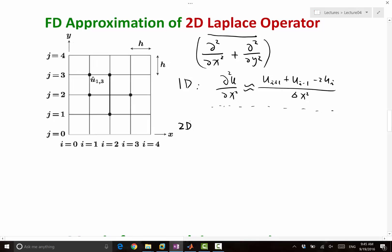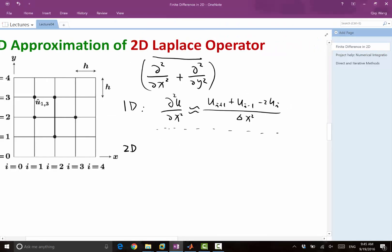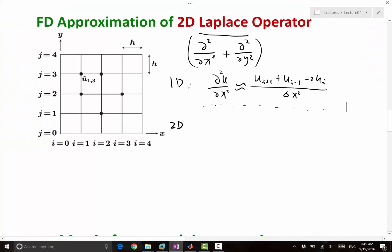Now in 2D, we can do the same thing. The partial square u, partial x squared, plus partial square u, partial y squared.